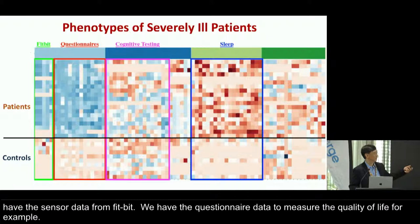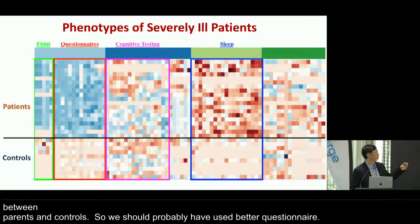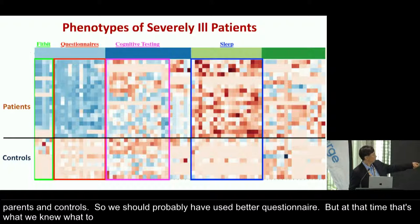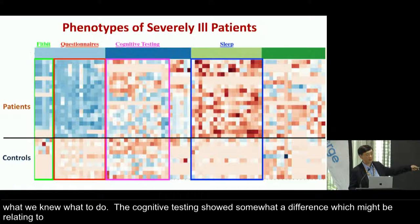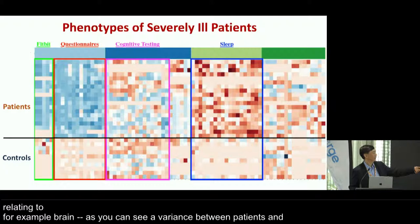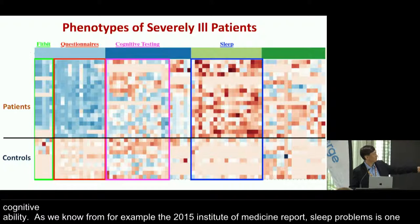There's a clear difference between patients and controls. We probably should have used a better questionnaire, but at that time that's what we knew. Cognitive testing showed somewhat a difference, which might relate to brain fog in the patients, with notable variance between patients and controls in cognitive ability. As we know from the 2015 Institute of Medicine report, sleep problems are one of the core symptoms of the disease, and comparing patients versus controls, you see a clear difference.